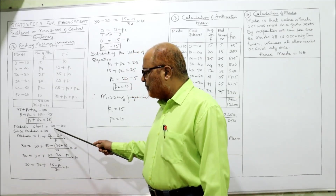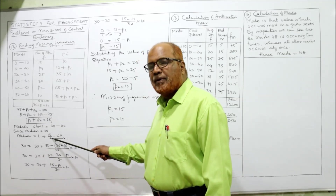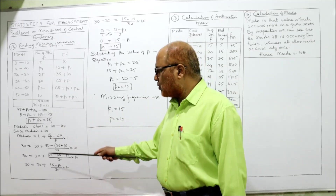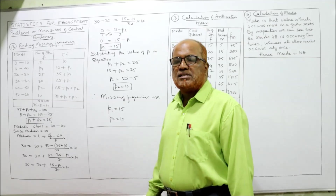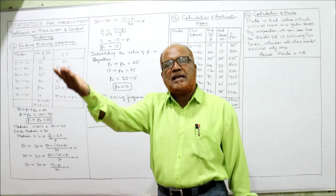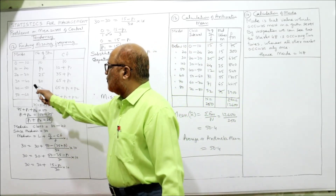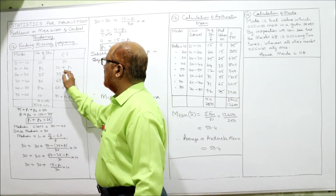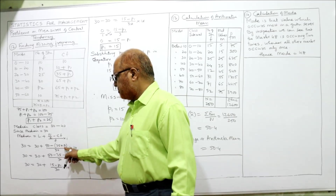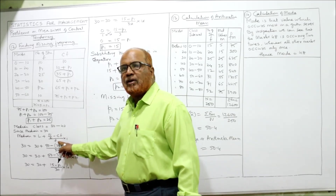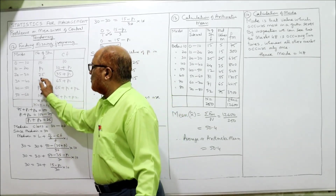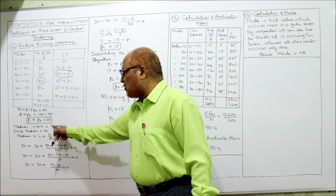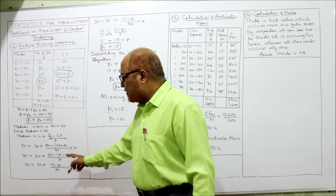The cf of the class preceding the median class (20–30) is 35 + p1. The frequency of the median class (30–40) is 30. The class width i = 10. Substituting into the formula: 30 = 30 + [(50 − (35 + p1)) / 30] × 10.